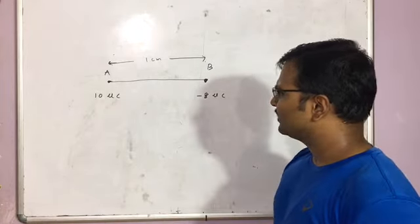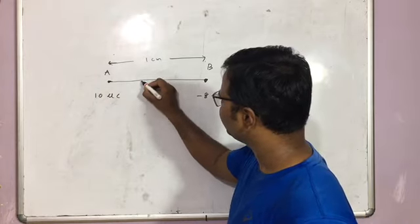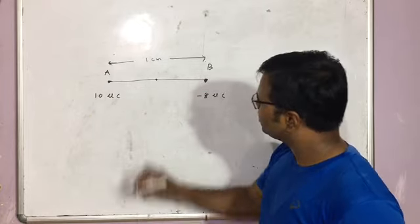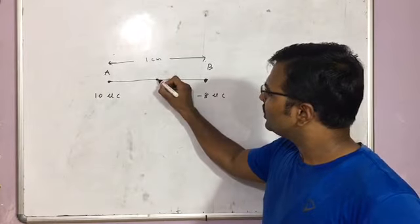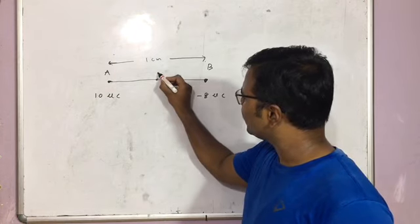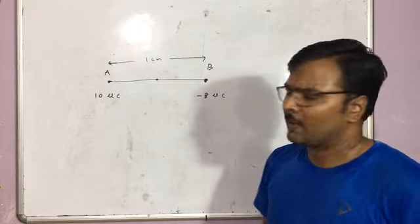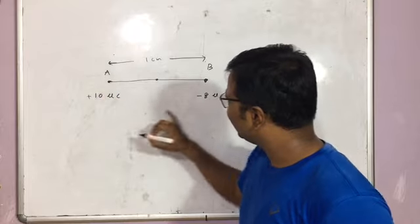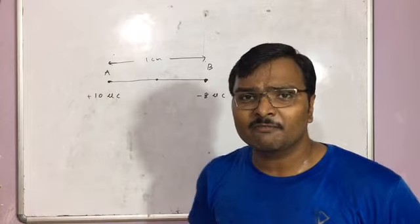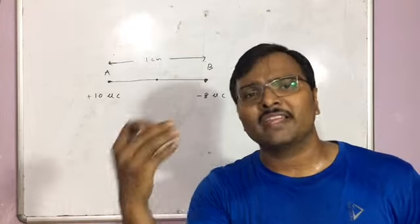Let's take one point — the midpoint, equidistant from both charges A and B. The distance of this point is the same from point A and point B, meaning both charges. It is a positive charge and a negative charge. For the electric field to be 0 at this point, the fields from both charges must cancel — they need to be in opposite directions.